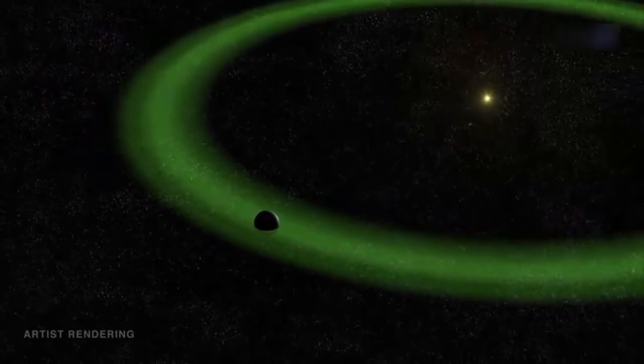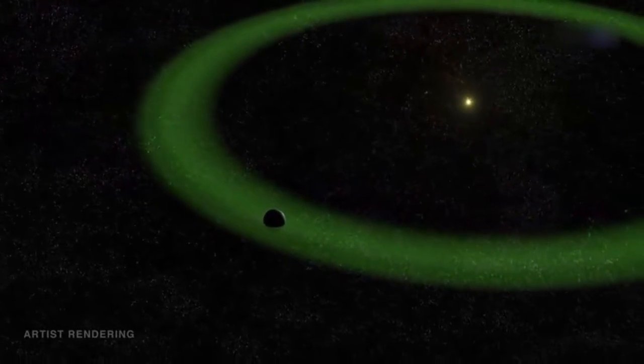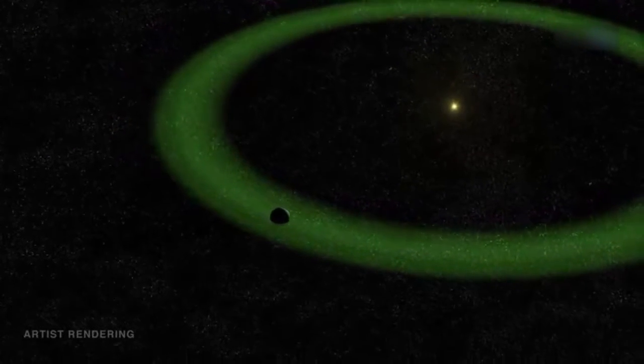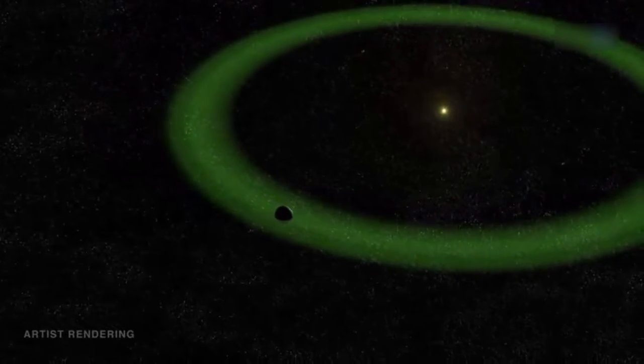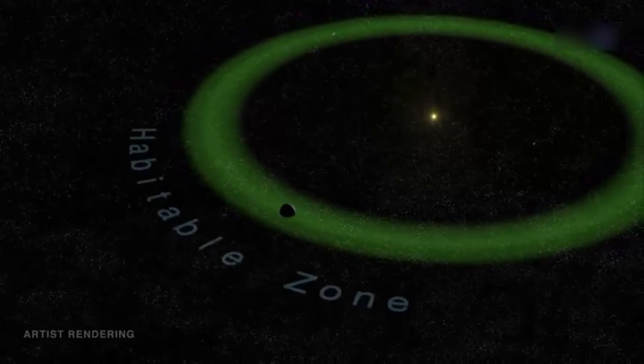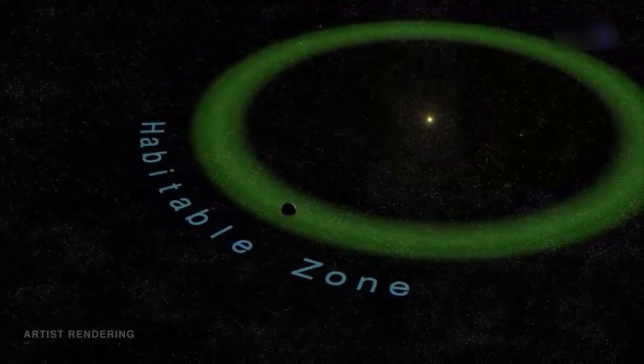Moreover, Kepler-452b's orbit is located in the Goldilocks zone of its star system, where the temperature is just right for liquid water to exist. This is also known as the habitable zone, because water is required for life as we know it.